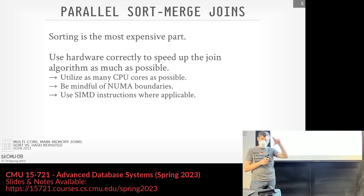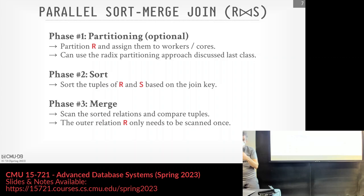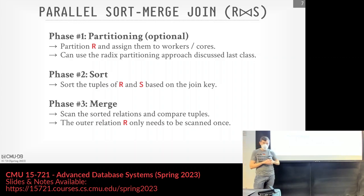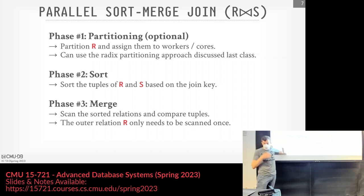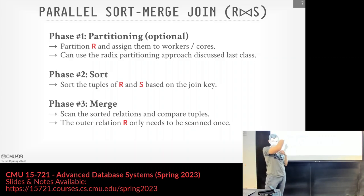Interestingly, the new system they're building — Umbra — doesn't even do sort-merge join, only hash joins. Just like parallel hash join, parallel sort-merge join has three phases: first the partitioning phase, where you split data across cores using radix partitioning on the join keys; then the sort phase; then the merge phase, where you compare tuples in lockstep. With duplicates, you may need to backtrack on the inner table, so you track where the last unique value was.